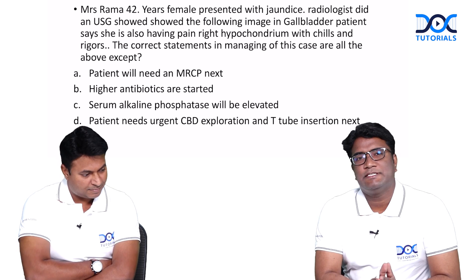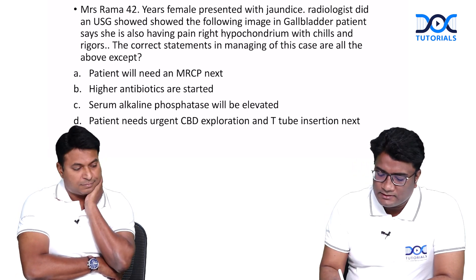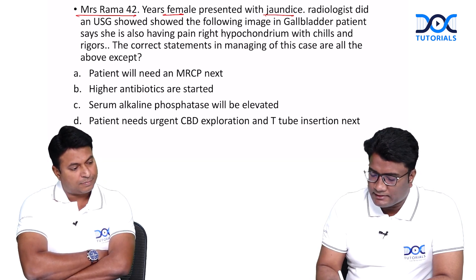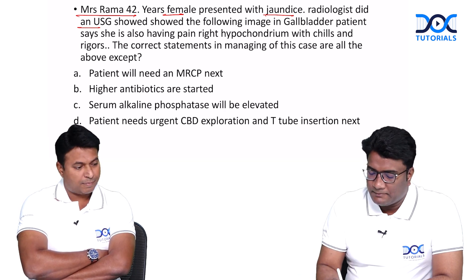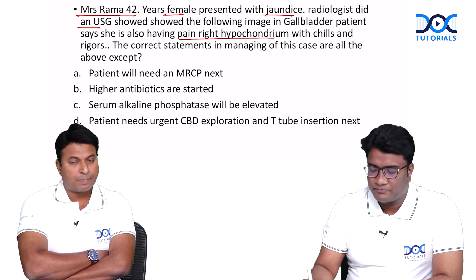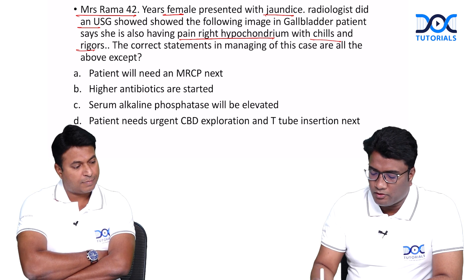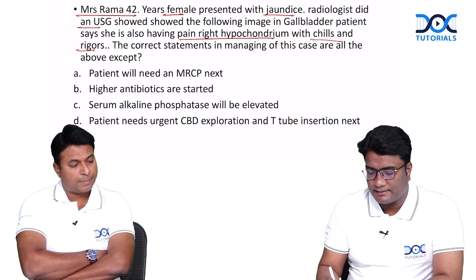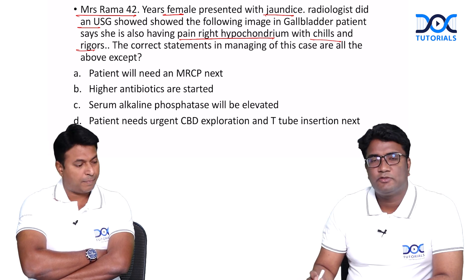Let's move on to the next question in the radiology-surgery integrated video section. We have a case: Mrs. Rama, a 42-year-old female, presented with jaundice. The radiologist did an ultrasound which showed an image of the gallbladder. The patient also has pain in the right hypochondrium, chills, and rigors. The correct statement in the management — all of the following except: patient will need an MRCP; higher antibiotics are started; serum alkaline phosphatase levels will be elevated; patient needs urgent CBD exploration and T-tube insertion.